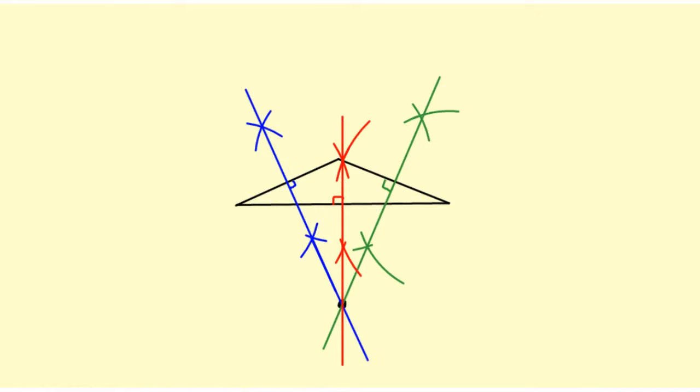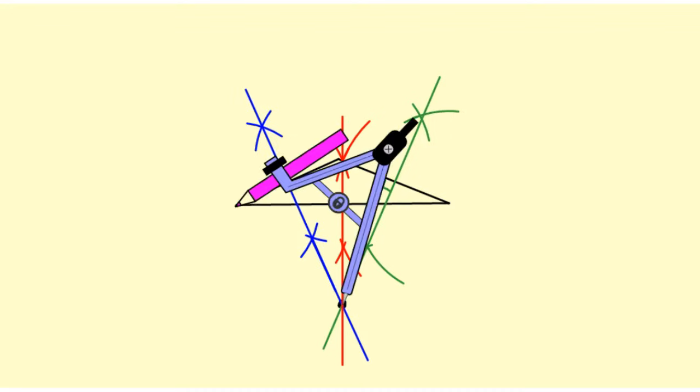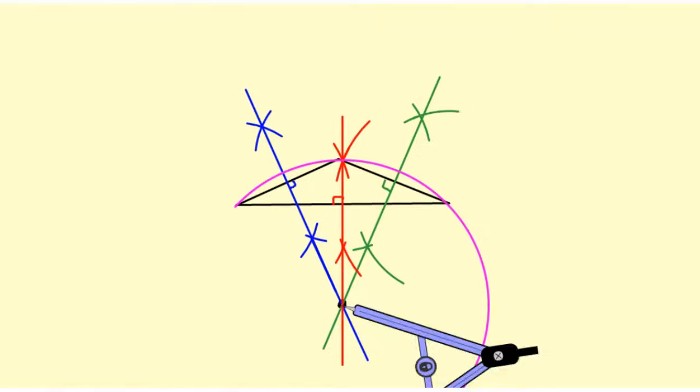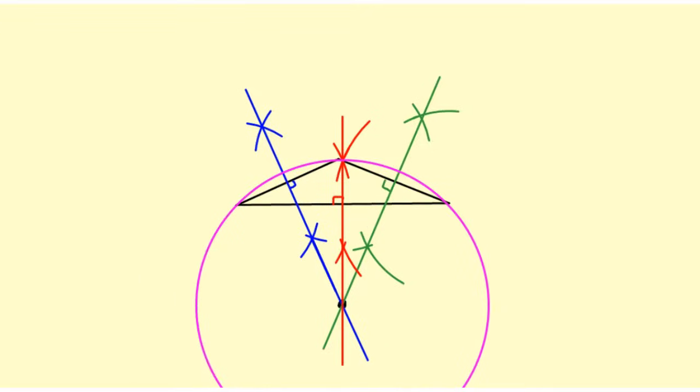I want you to notice on this one, because it's an obtuse triangle, the circumcenter is actually outside the triangle. Let's see what the circumscribed circle looks like. Even though part of the circle is off the screen, you can still see that you do get the center of the circumscribed circle. So if you have an obtuse triangle, just keep in mind that you're looking for the circumcenter to be outside in the exterior of the triangle.